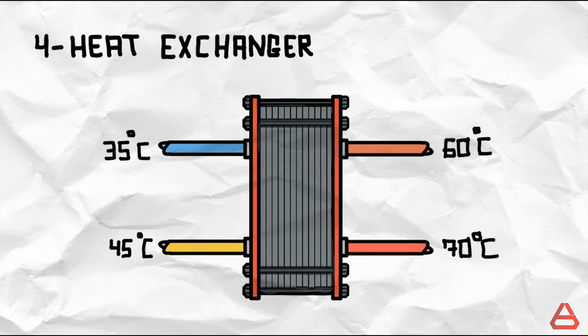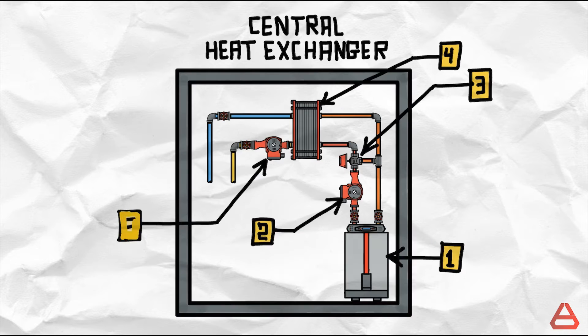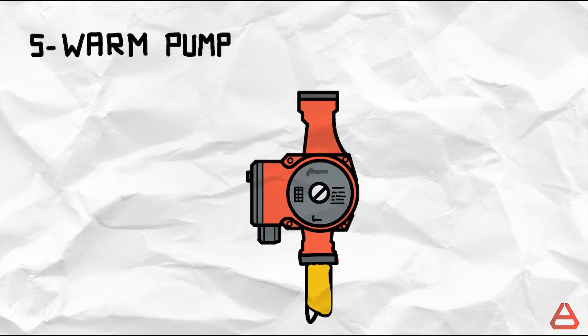Four, A heat exchanger which is the part which connects the hot circuit with the warm circuit in a non-mixing way of course. Five, A second circulating pump located after the heat exchanger from the side of the warm circuit. We call it the warm pump.